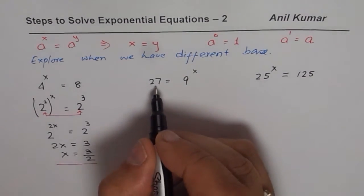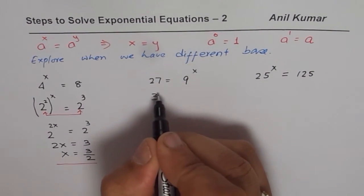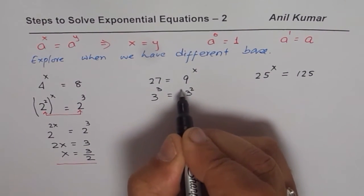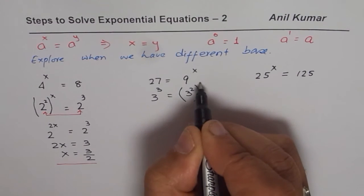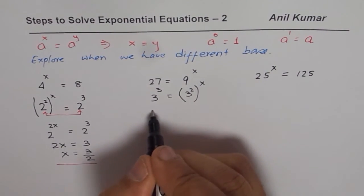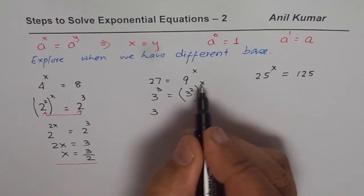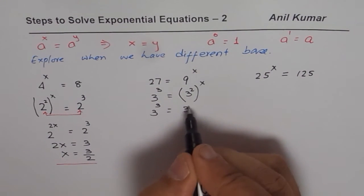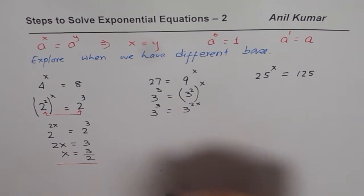Now, 27 as you know, can be written as 3 cube. 9 can be written as 3 square. So I am writing 9 as 3 square, that is to the power of x. Now, we will apply the power rule. So 3 cube will be 3 to the power of 2x.